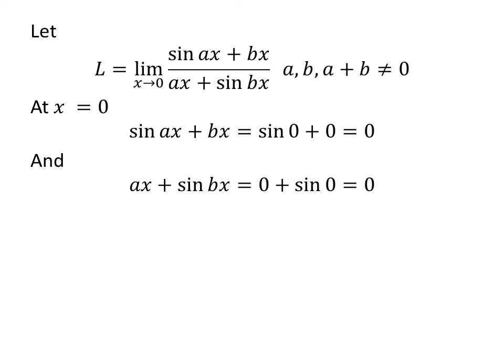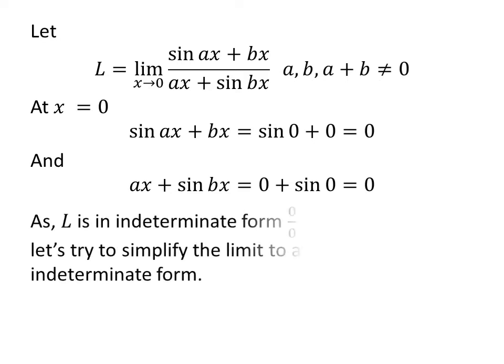At point x equal to 0, the numerator sin(ax) + bx is equal to 0 and the denominator ax + sin(bx) is equal to 0. As L is in indeterminate form 0 upon 0 at x equal to 0, to avoid this indeterminate form, let us further simplify the limit.